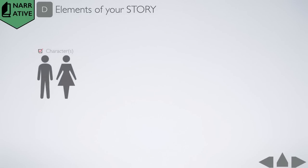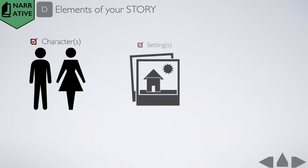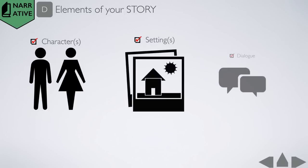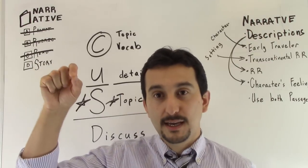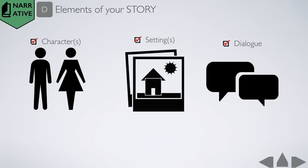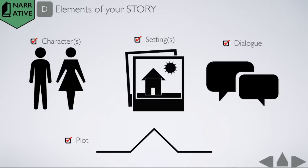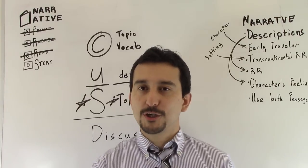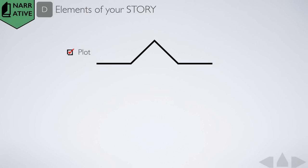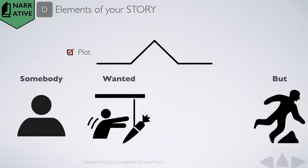We have to have character or characters, we have to have a setting, and we have to have dialogue, and it all has to be mixed in together and put into a nice, fluid plot. So how do we practice that with students? Well, a basic plot structure, when complete, should be able to fill in the somebody-wanted-but-so strategy.